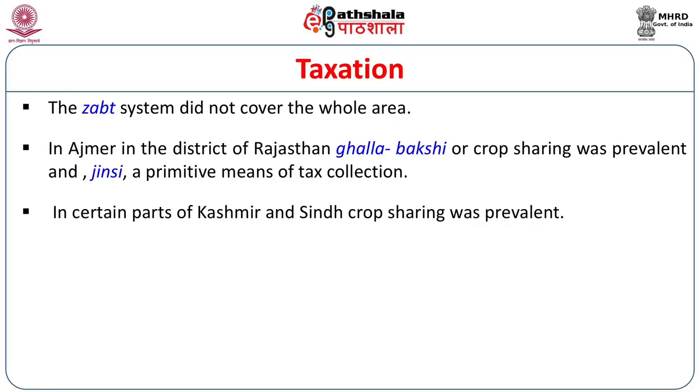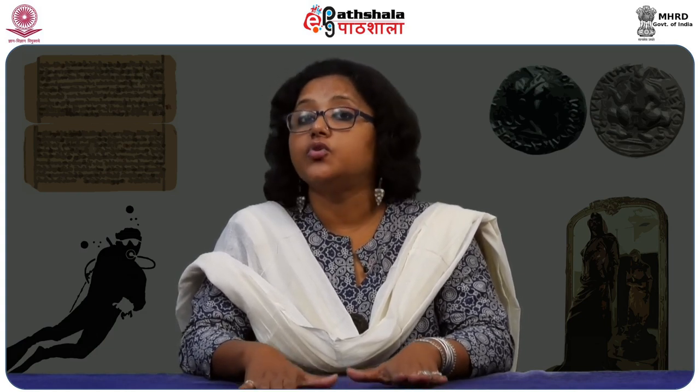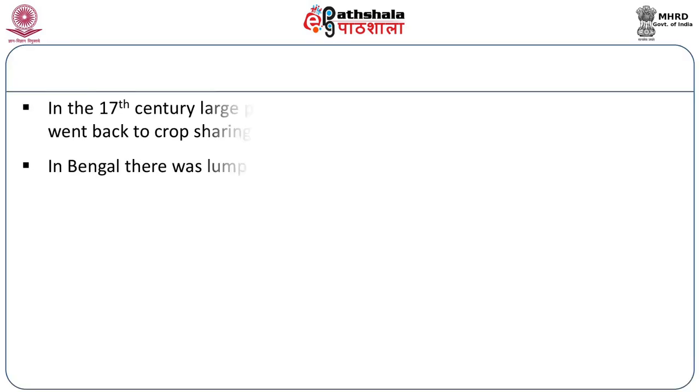The system therefore had its own flexibility — otherwise it would not have worked so well. In certain parts of Kashmir and Sindh, crop sharing was also prevalent. In the 17th century, large parts of Gujarat did away with the measurement system and went back to the crop system, depending on the course of agriculture. Dislocation of agriculture due to famine, natural calamity, or peasant rebellion allowed the system to revert to its older tax system.